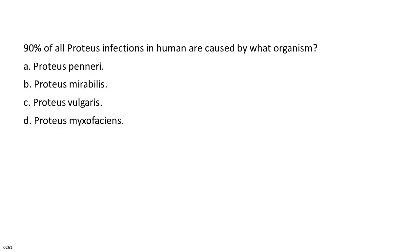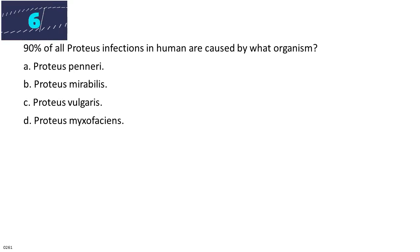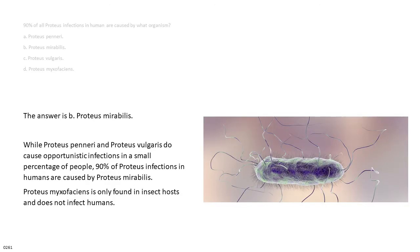90% of all Proteus infections in humans are caused by what organism? A. Proteus penneri. B. Proteus mirabilis. C. Proteus vulgaris. D. Proteus myxofaciens. The answer is B. Proteus mirabilis. While Proteus penneri and Proteus vulgaris do cause opportunistic infections in a small percentage of people, 90% of Proteus infections in humans are caused by Proteus mirabilis. Proteus myxofaciens is only found in insect hosts and does not infect humans.